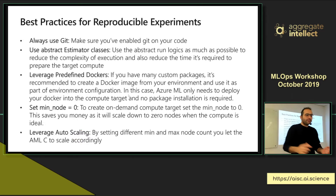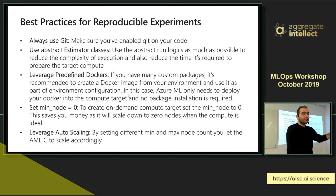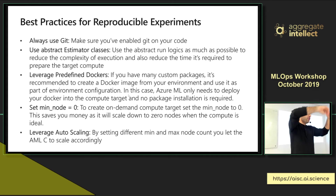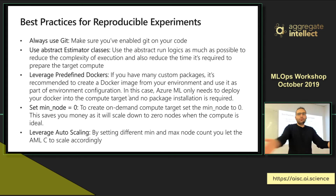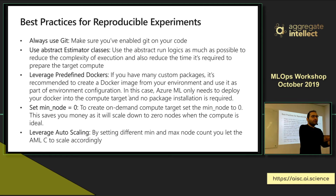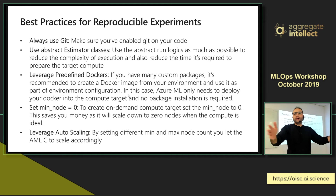Some best practices for reproducible experiments: make sure you use Git. Use the abstract classes to handle Dockerization automatically — I didn't write any Docker code; everything happens in Docker automatically. Try to leverage predefined Docker images as much as possible, and if the image you need isn't there, point it to a Docker Hub image — millions of pre-built images are available. Set the minimum node to zero so your cluster scales down to zero and you pay nothing when not using compute targets. You can leverage autoscaling from zero to whatever you need.